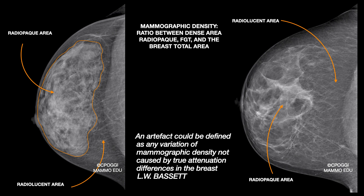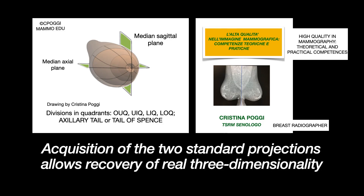By looking at the front of the breast — the coronal plane — you can divide it into four quadrants, drawing two planes perpendicular to one another, passing through the nipple: upper outer, upper inner, lower inner, lower outer. And this is the axillary tail, or tail of Spence.